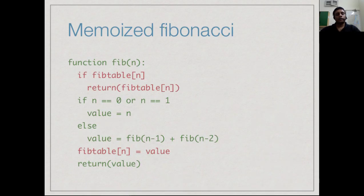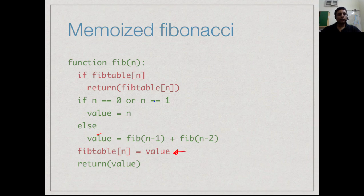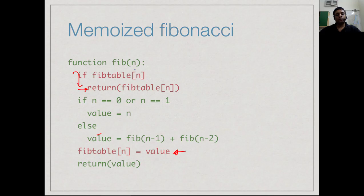Let's see what the memoized Fibonacci looks like in code. The original green code: Fib of n — if n is 0 or 1, set the value to n; else set the value to Fib(n-1) + Fib(n-2) and return. Now we introduce the memo bits in red. We have a table called Fib_table indexed by position. When we get an argument to Fib, the first thing we do is check whether Fib_table has an entry for n — if so, return it. If not, compute it, then before returning, store it in Fib_table so we never compute it again.